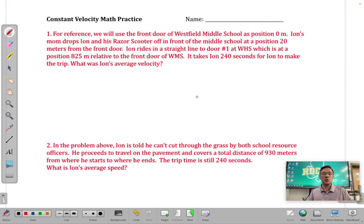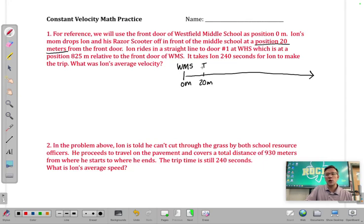So we've read through it. There's kind of a lot there. Let's go back and dissect. This one is one where it's actually really good to draw a diagram. So we notice early on, it says the middle school WMS is at zero meters and then Ion is making a trip over to the high school. And so the first thing it tells us is that Ion is dropped off in front of the middle school at a position of 20 meters from the front door. So we'll call this 20 meters and I'm going to put an I for Ion. That's where he starts.